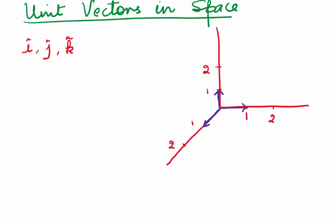Then what about the space? If we take our three axes x, y, and z, and we take three unit vectors — vectors which have a magnitude of 1 — let's say i is the unit vector along the x-axis, j is the unit vector along the y-axis, and k is the unit vector along the z-axis. Then i, j, k are called the unit vectors in space. All three vectors i, j, k have a magnitude of 1. You must have noticed unit vectors are always represented by a cap.